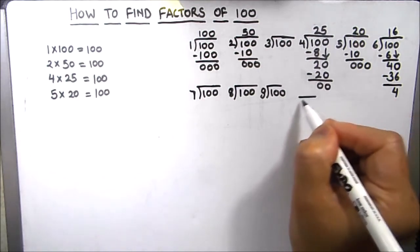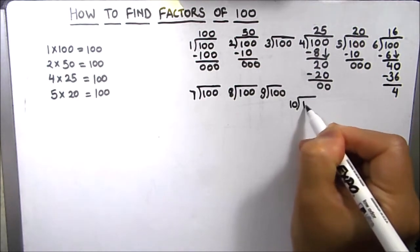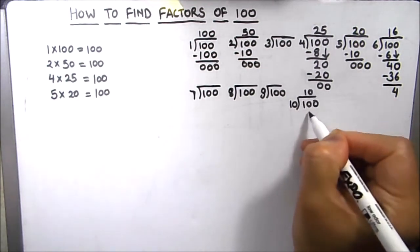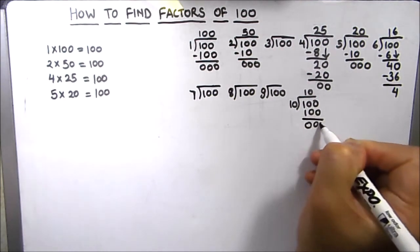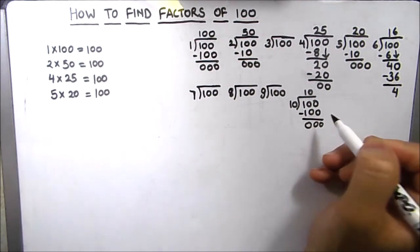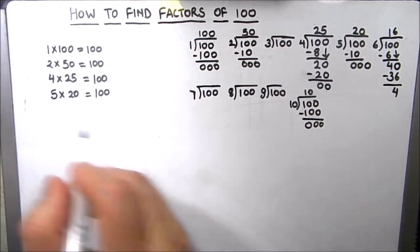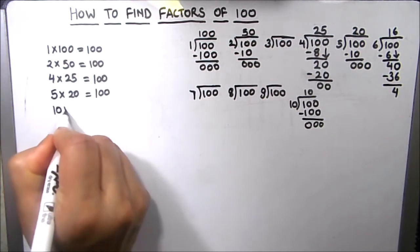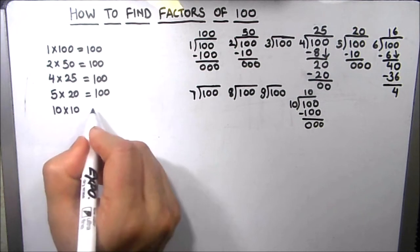The next number is 10. 10 times 10 is 100 and we got 0 as remainder. That means 10 is a factor of 100. So we got two factors: 10 times 10 is 100.